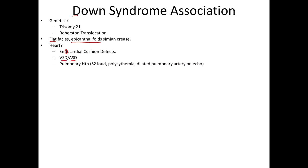How is the USMLE going to test endocardial cushion defects? They're going to say bilateral or unilateral bilateral AV valve — atrial ventricular valve — regurgitation. Remember that your endocardial cushions are going to be extremely important in forming your normal valves.